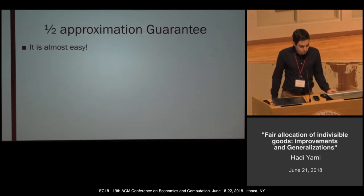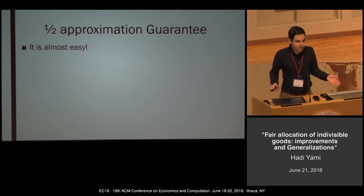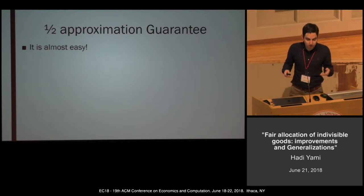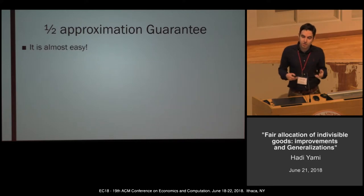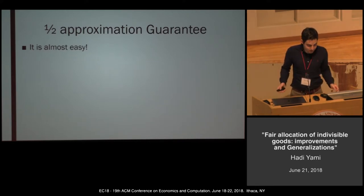Since we cannot guarantee one MMS for all agents, the question becomes: can we give any other guarantee? For instance, one-half, two-thirds, three-quarters, something like that.